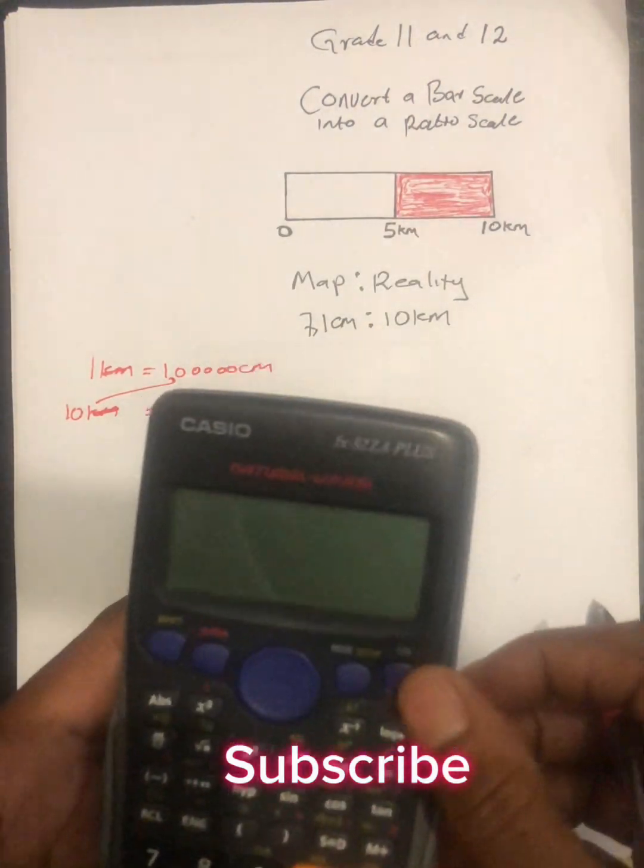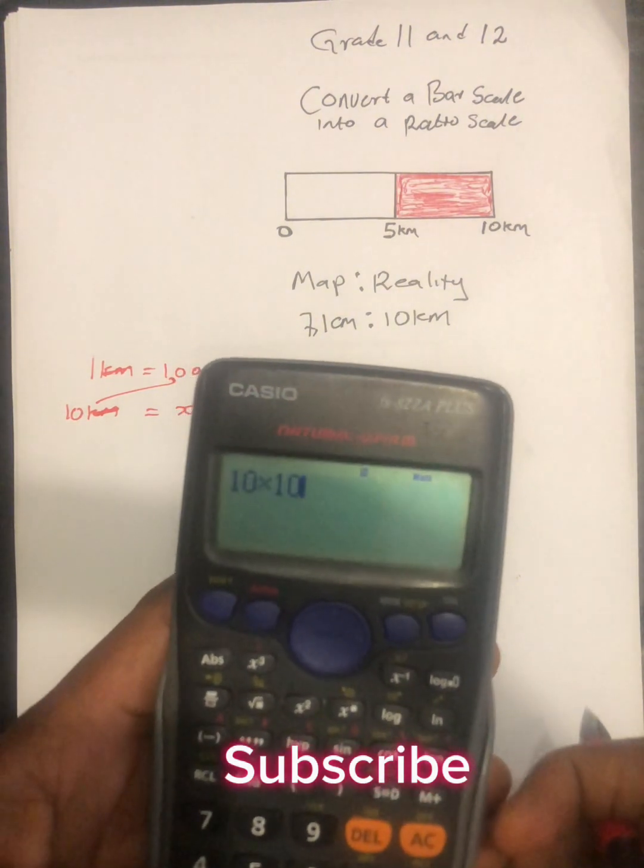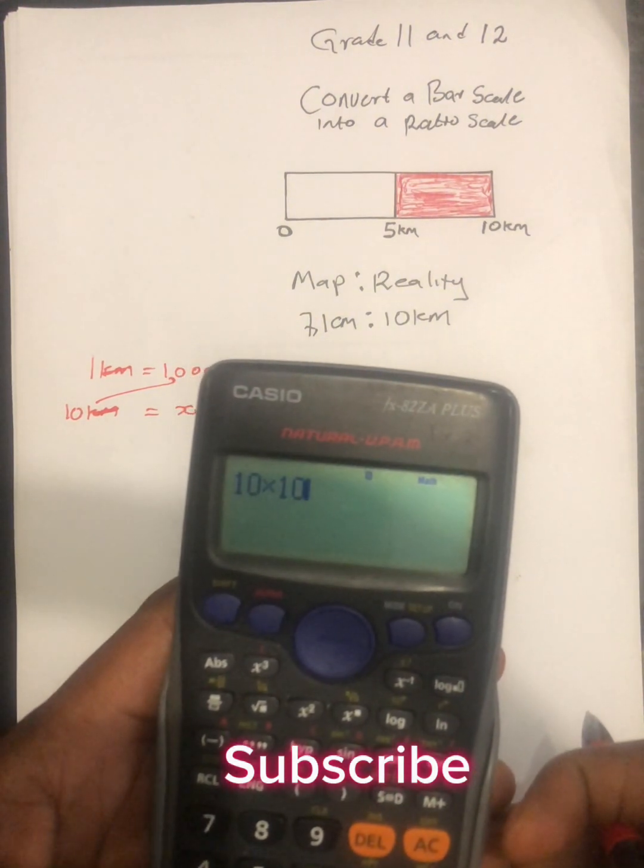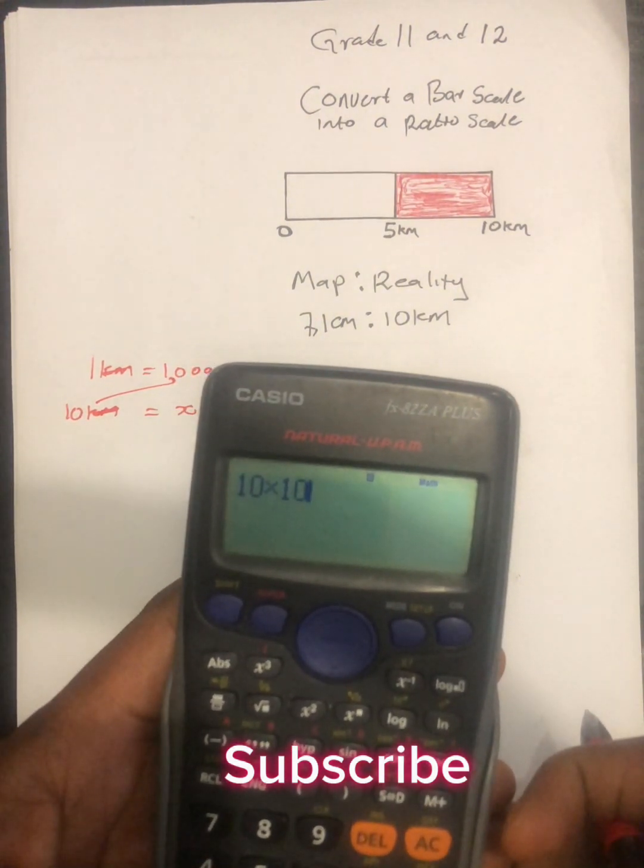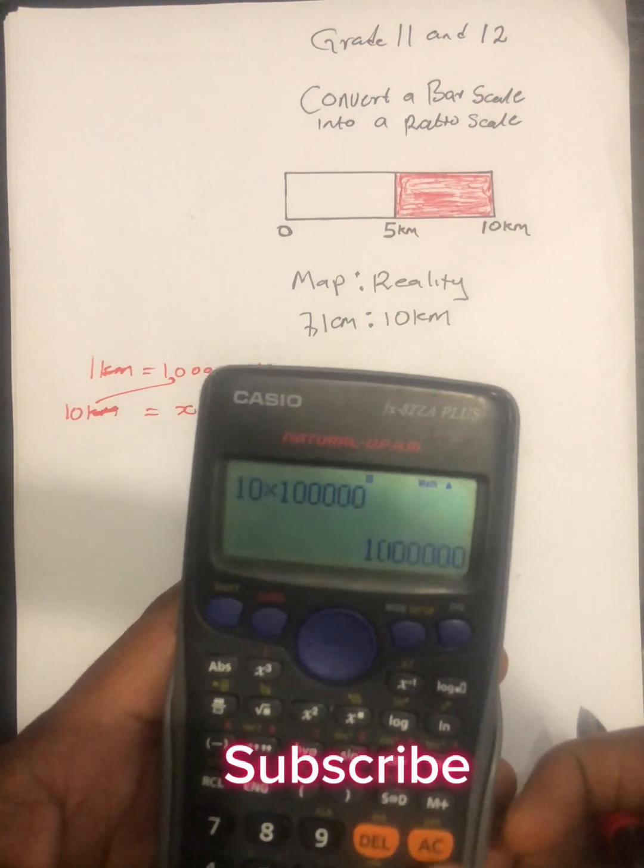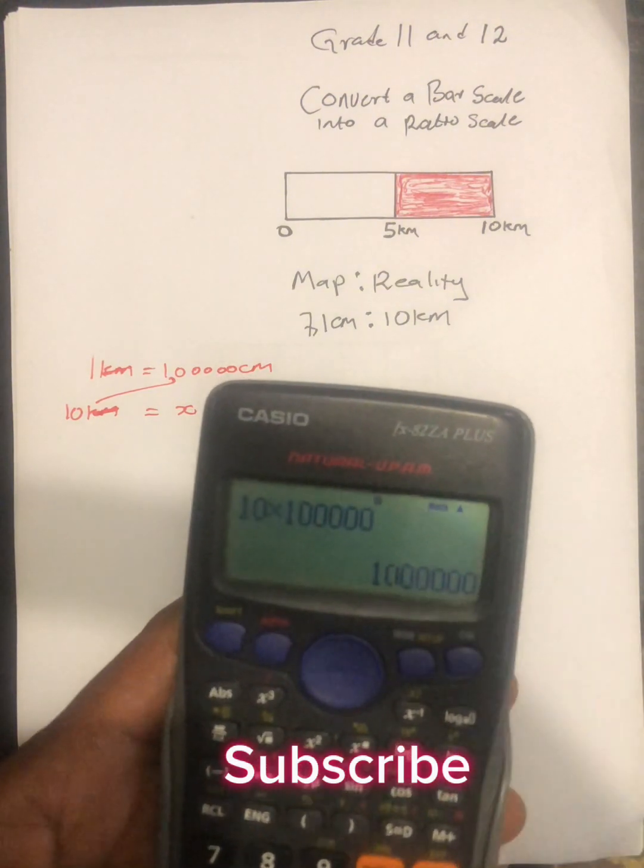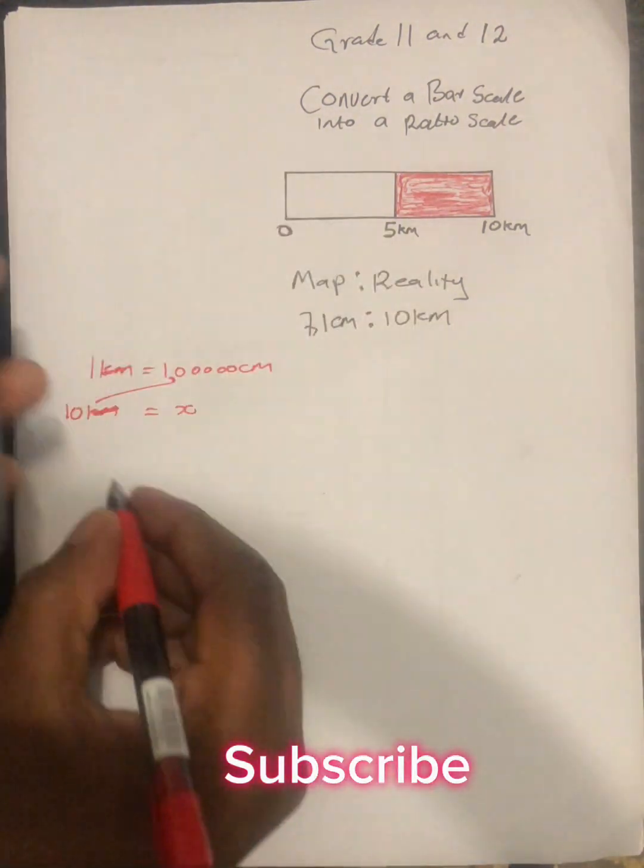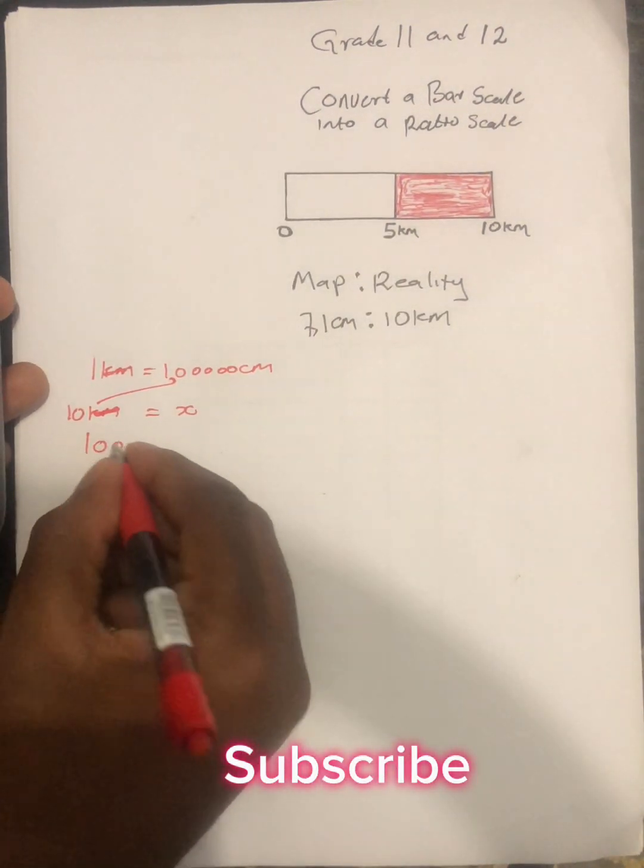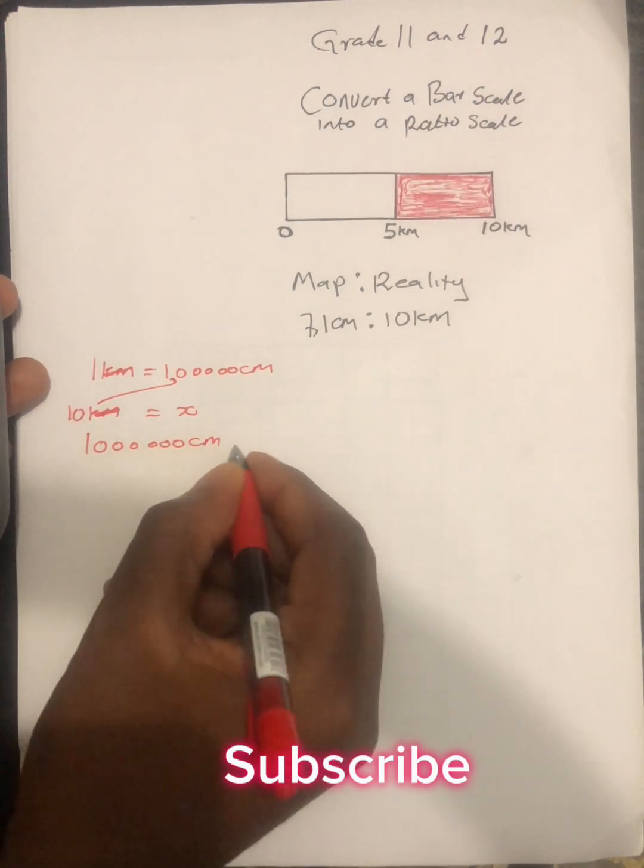We say 10 multiply by 100,000. We find our answer is 1, 2, 3, 4, 5, 6. It's 1 million. So this is 1,000,000 centimeters.